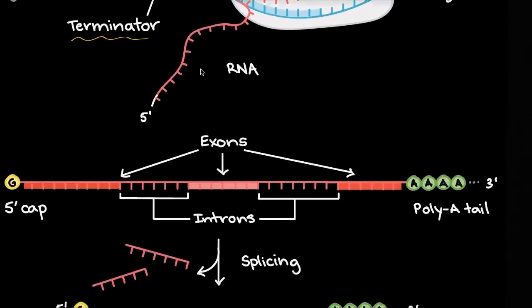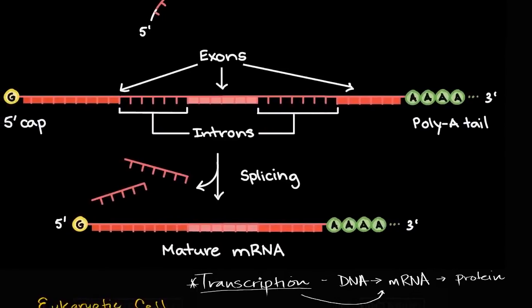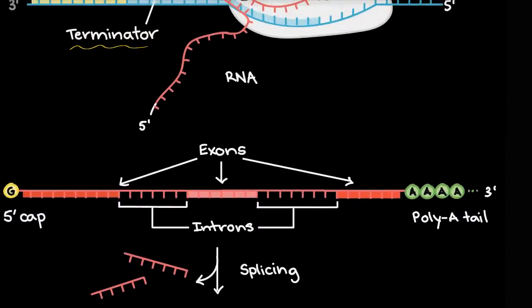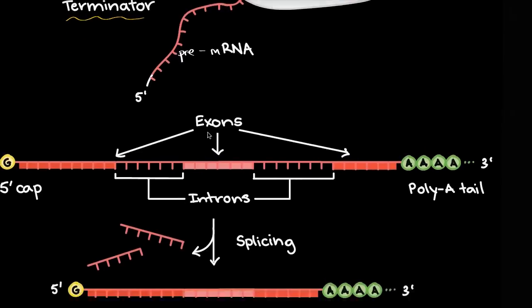But if we're talking about a eukaryote, well then we have to do a little bit of processing. If this is a prokaryote right over here, this would be our mRNA. If this is a eukaryote, then this is our pre-mRNA, which now has to be processed.